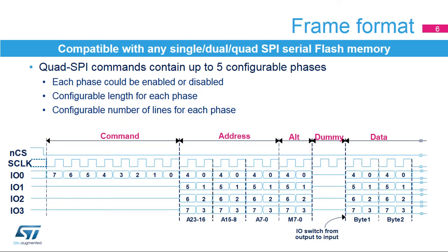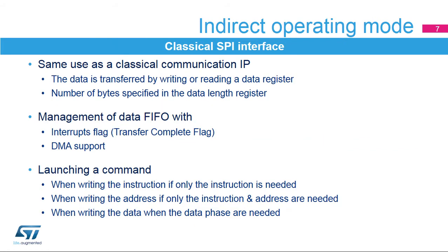The Quad SPI Memory Interface offers high flexibility in frame format configuration. This flexibility allows it to address any serial flash memory. Users can enable or disable each of the five phases and configure the length of each phase, as well as the number of lines used for each phase.